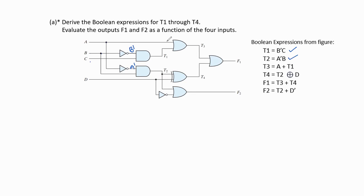Next, for t3, the inputs are a and t1, so t3 = a + t1 (OR operation). Next, for t4, the inputs are t2 and d — these two are XOR with each other. For the final outputs f1 and f2, f1 equals the OR operation of t3 and t4, therefore f1 = t3 + t4.